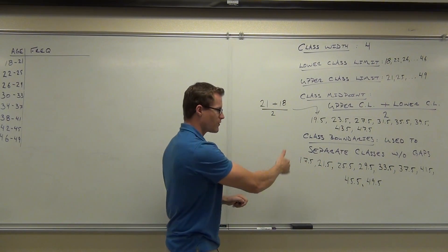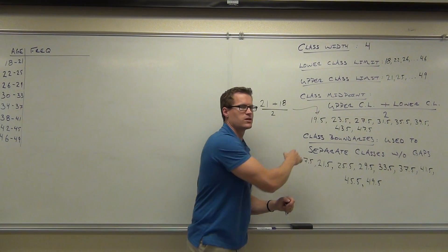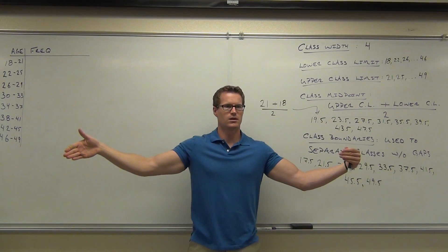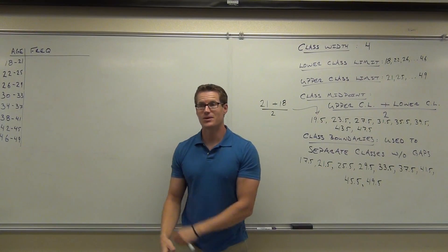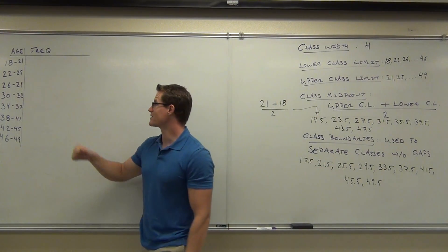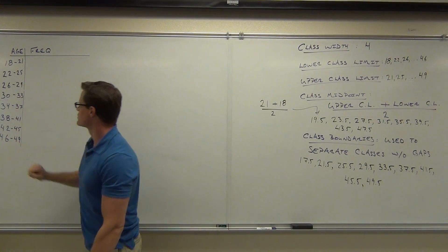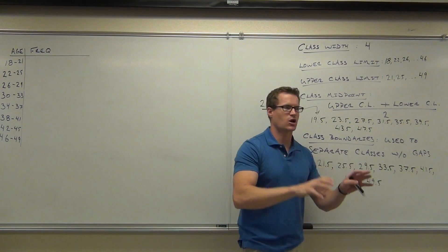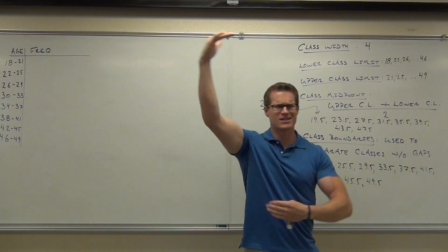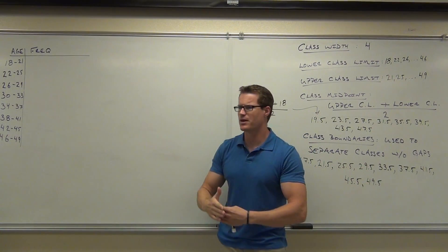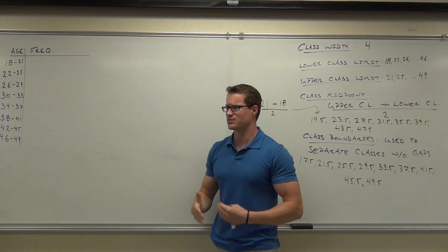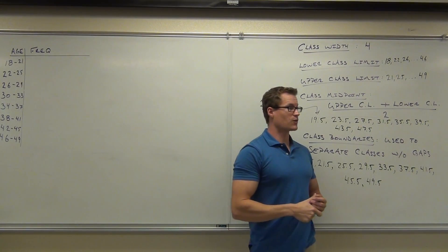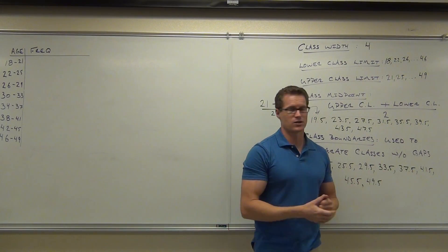So we do have a first one. We're going to have one more class boundary than we have classes, because we have to start somewhere and end somewhere. Now let's go ahead and fill this thing out. We've already made our classes using our class width, our lower class limits, our starting spot, and our range of numbers divided by the number of classes we want. That's how we got all this.